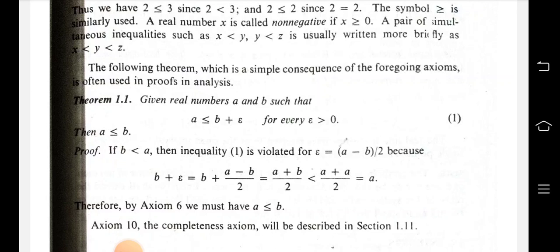Since b is less than or equal to a, we set epsilon equal to a minus b divided by 2. Then b plus epsilon equals b plus (a minus b)/2, which simplifies to (a plus b)/2, which is less than (a plus a)/2, that is equal to a. This gives the contradiction.